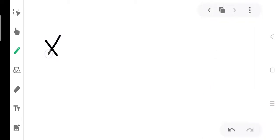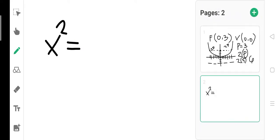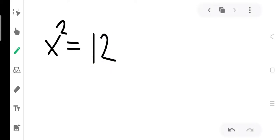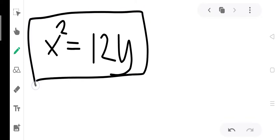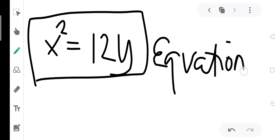Since our vertex is at the origin, we have x squared equals 4 times P, which is 4 times 3 equals 12. Always multiply your P by 4 to get your equation, so we have x squared equals 12y. This is our equation.